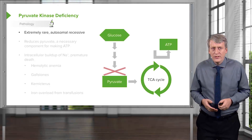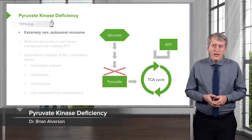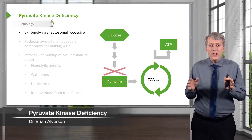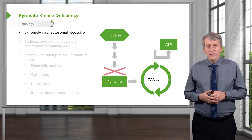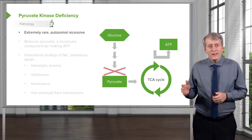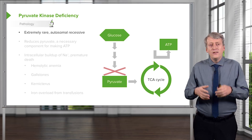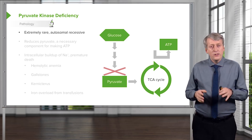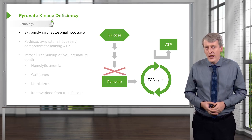Let's switch goals now towards another cause of anemia that you should know about and we often think about as a metabolic condition. This is pyruvate kinase deficiency. It is extremely rare, but it sometimes shows up on tests, so let's chat about it.